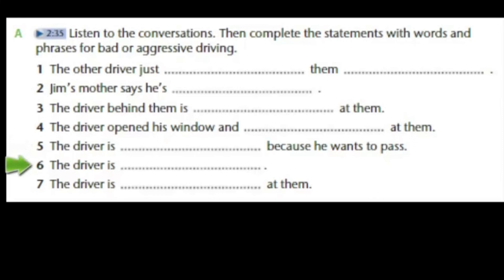Conversation 6. Look at the way that guy's driving — he just passed us on the left, and now he's passing that car on the right. There he goes again, now he's in the left lane passing another car. Unbelievable — he thinks he owns the road. You know what bugs me? There's never a policeman around when people drive like that. You can say that again.